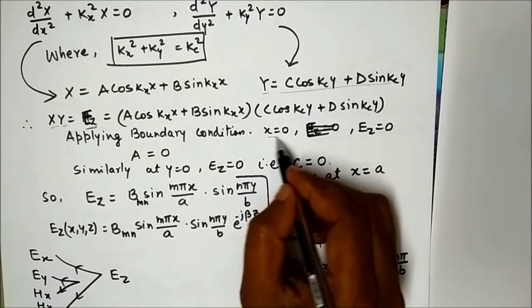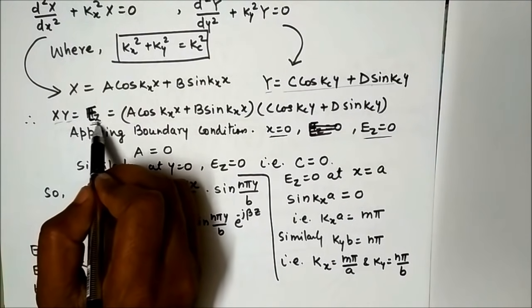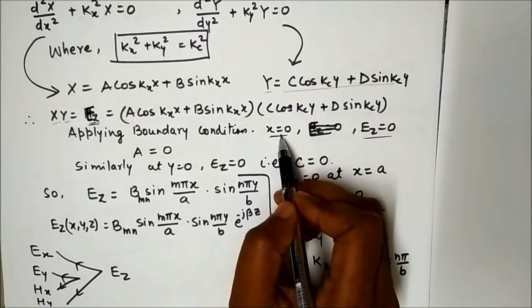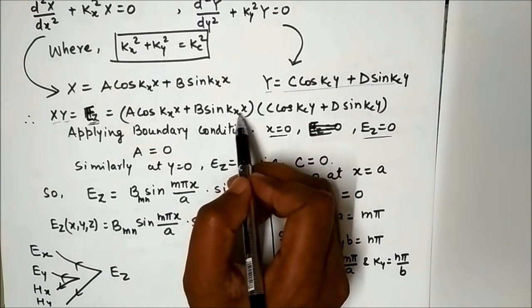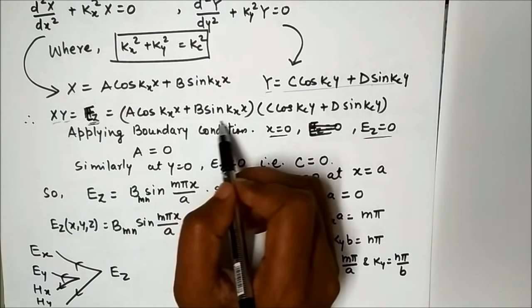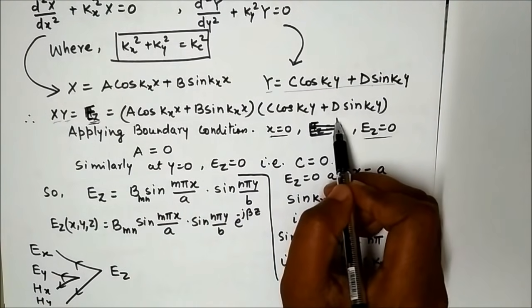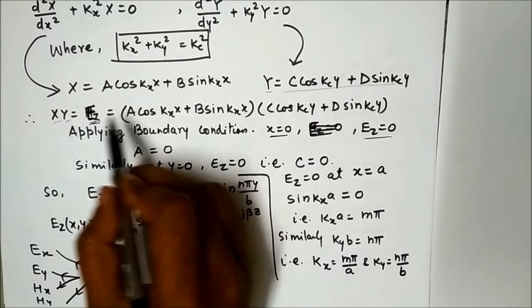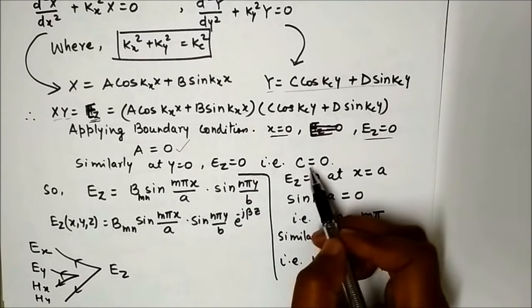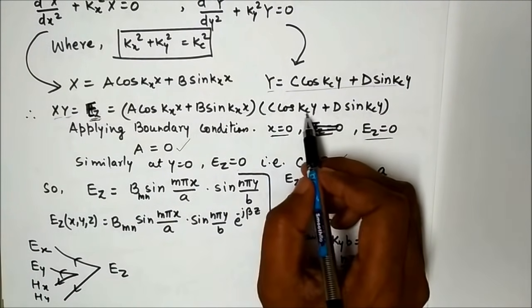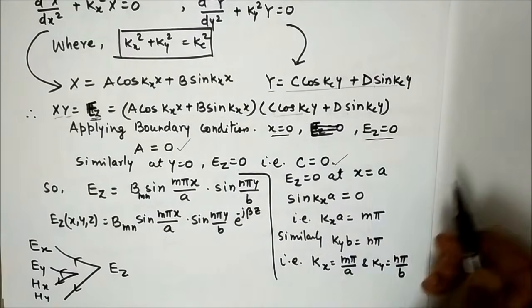Applying boundary condition Ez=0 at x=0: cos(0)=1, so A·1 = 0, meaning A=0. Applying Ez=0 at y=0: C·1 = 0, meaning C=0. So both A and C are zero, and those cosine terms drop out. We are left with only B·sin(Kx·x) and D·sin(Ky·y) in the expression.